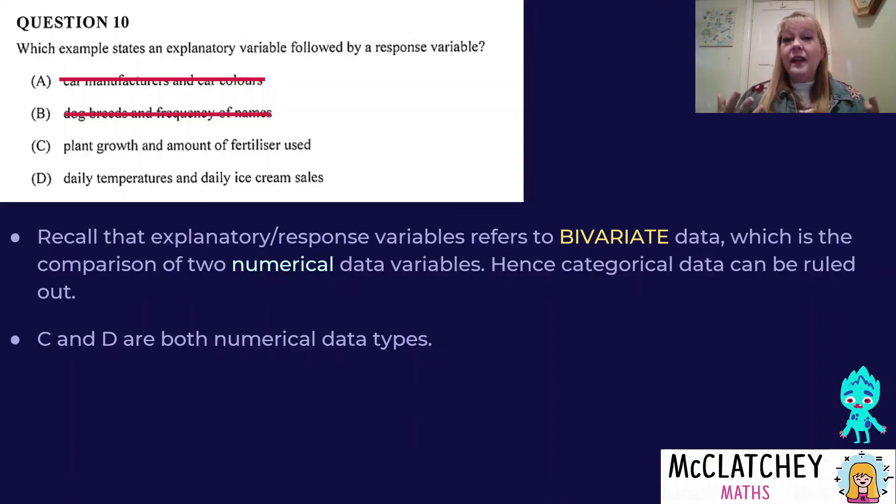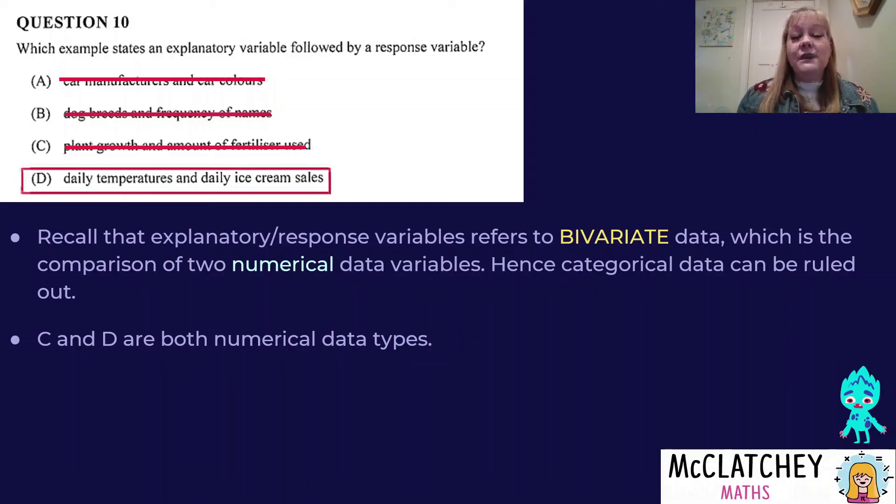We've just got to decide which one has the explanatory variable first and the response variable second. Remember, explanatory variable doesn't necessarily cause the response variable, but it influences or could have an influence on it. If I think about plant growth and the amount of fertilizer used, I'd be expecting that the more fertilizer I put on, the more my plant would grow, not the other way around. So we can eliminate C because it's the wrong order. Daily temperatures versus daily ice cream sales - I would expect that the hotter it gets, the more ice cream I would sell. So definitely temperatures influence ice cream sales. Therefore, that's our correct answer.